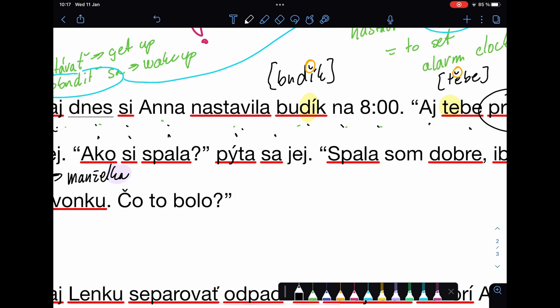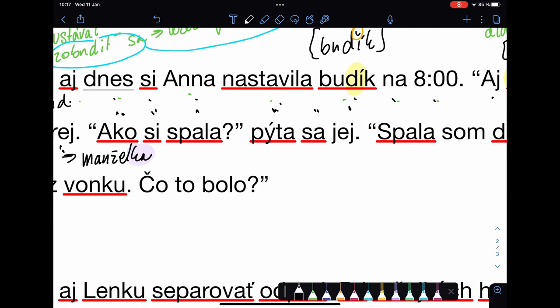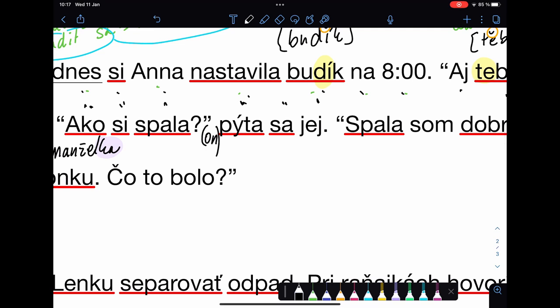Ako si spala, pýta sa jej. How did you sleep? He asks her. We don't write he or the person, as in for example in German, you always have to name this person. So we just don't use that, because from the form of the verb, is clear that it's third person singular.